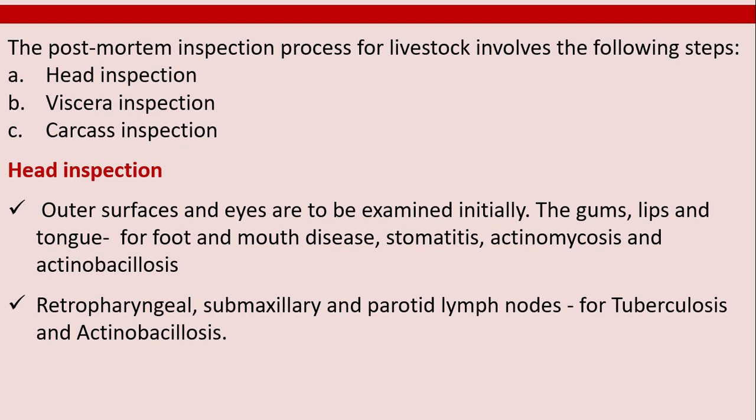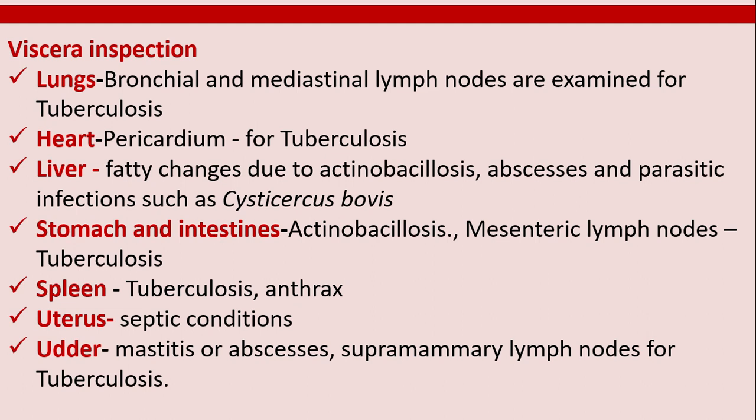Head inspection: outer surfaces and eyes are examined initially, followed by the gums, lips, and tongue for foot and mouth disease, stomatitis, actinomycosis, and actinobacillosis. The retropharyngeal, submaxillary, and parotid lymph nodes are examined for tuberculosis and actinobacillosis.